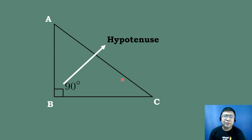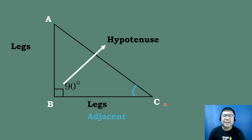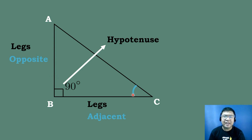After we have identified the hypotenuse, the two remaining sides of the right triangle — side BC and side AB — are called the legs. They can be the shorter leg or the longer leg depending on the measure of the right triangle. Now, if we are talking about angle C as our given angle, the side in between the given angle and the right angle is called the adjacent side. So side BC is the adjacent side. The opposite side of angle C, which is segment AB, will be the opposite side.